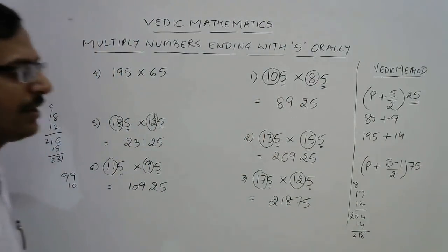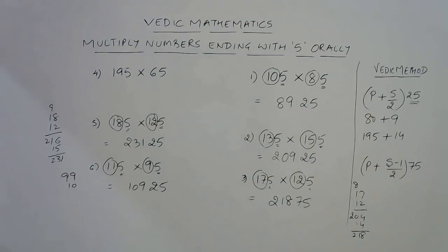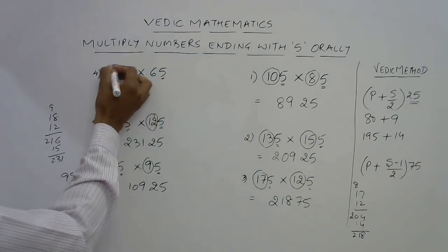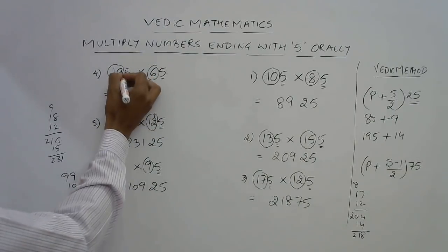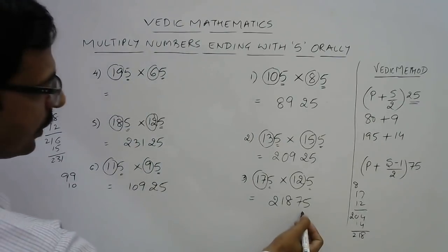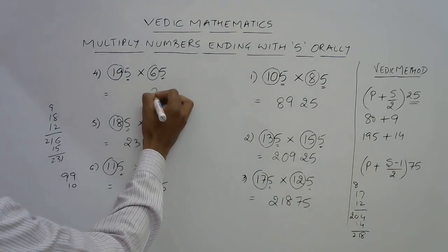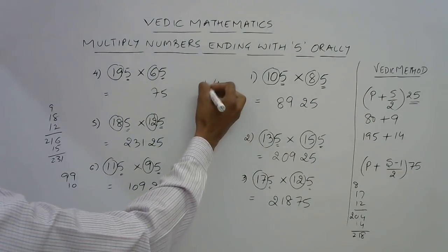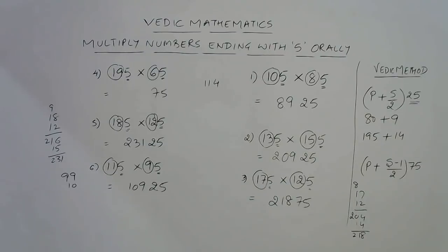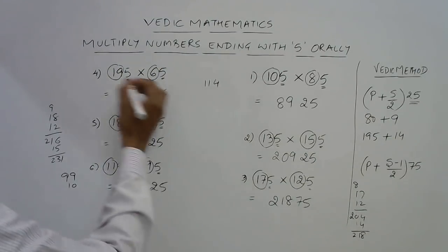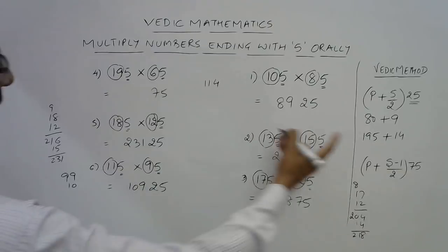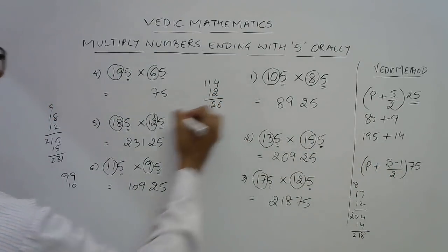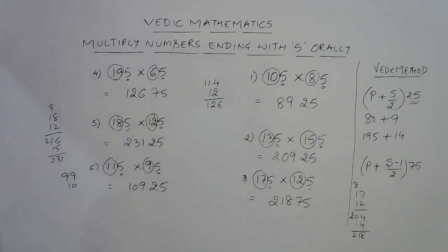The final one: if you leave 5, this is 19 and 6. Our answer is going to end with 75. Now 19 into 6 is 114. After 114, what is to be added? 19 plus 6 is 25, minus 1 is 24, divided by 2 which is 12. So 126 is to be written in front to give you the final answer.